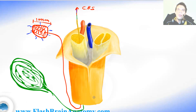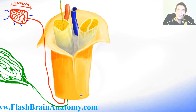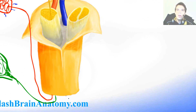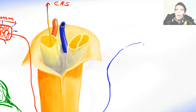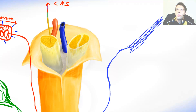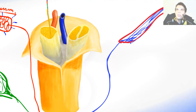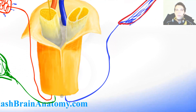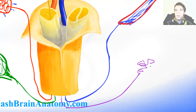There are also heat and cold receptors. The heat receptors are called the Ruffini corpuscles. They have a net of nerve fibers with a capsule around it. The cold receptors are called the end bulbs of Krause and they look something like this.